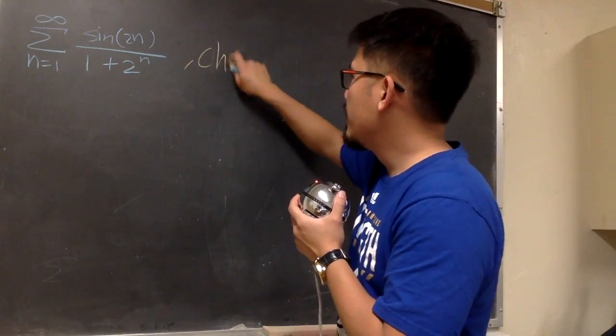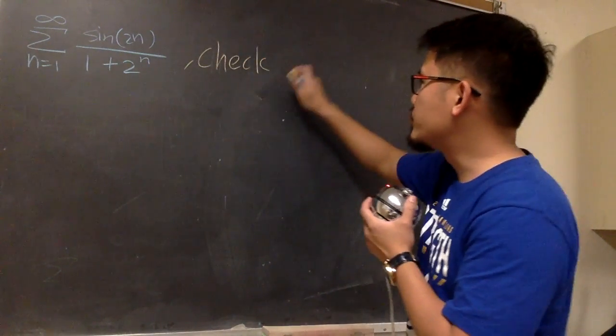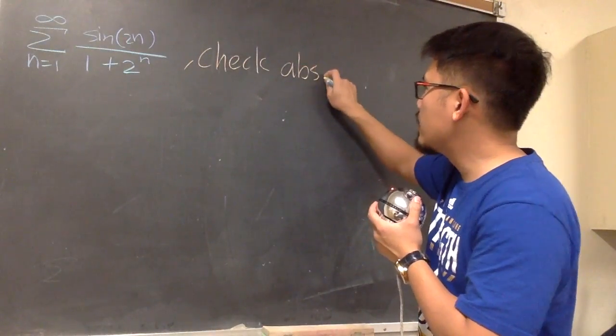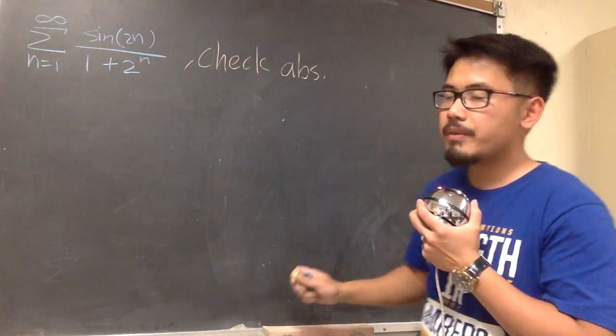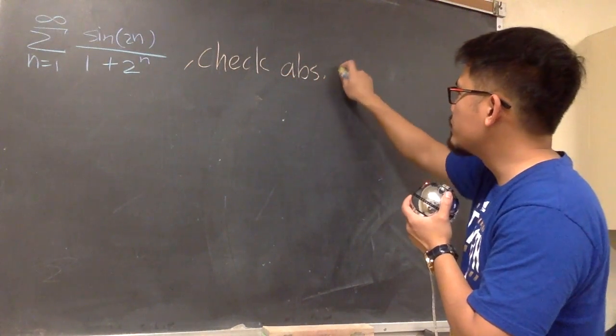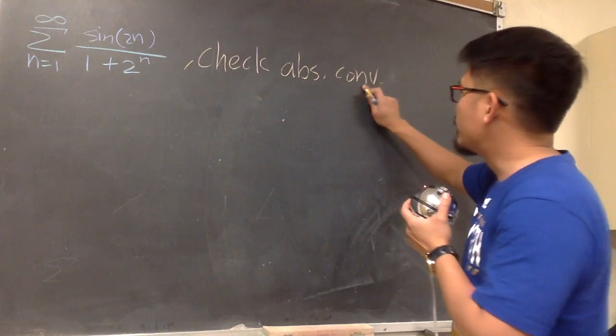We will check the absolute value version of this instead. Instead of working with this, I will check the absolute value version of the original. So that's checking for absolute convergence or not.